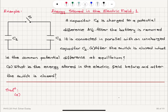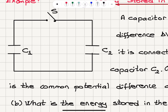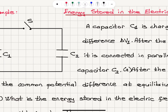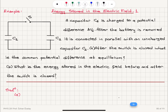Energy stored in the electric field. A capacitor C1 is charged to a potential difference delta V1. After the battery is removed, it is connected in parallel with an uncharged capacitor C2. So this switch is closed and it gets connected to capacitor C2 which is initially uncharged. Part A: after the switch is closed, what is the common potential difference at equilibrium?